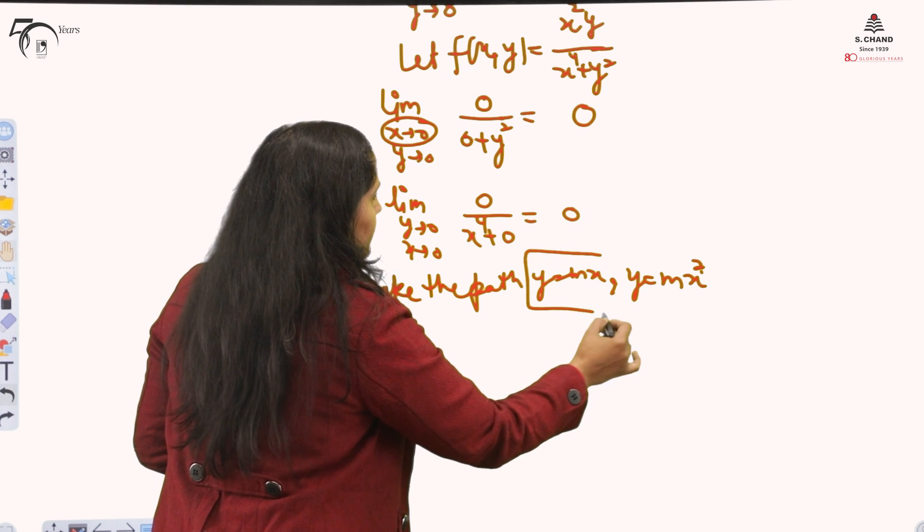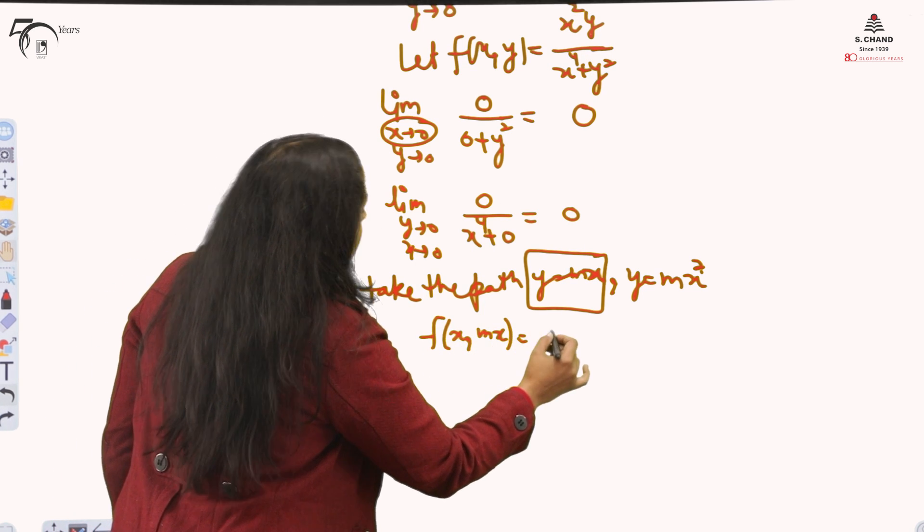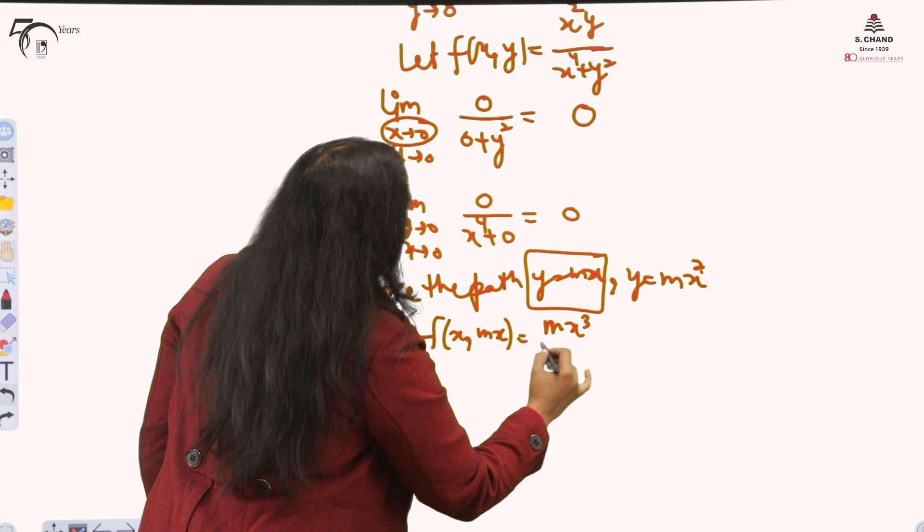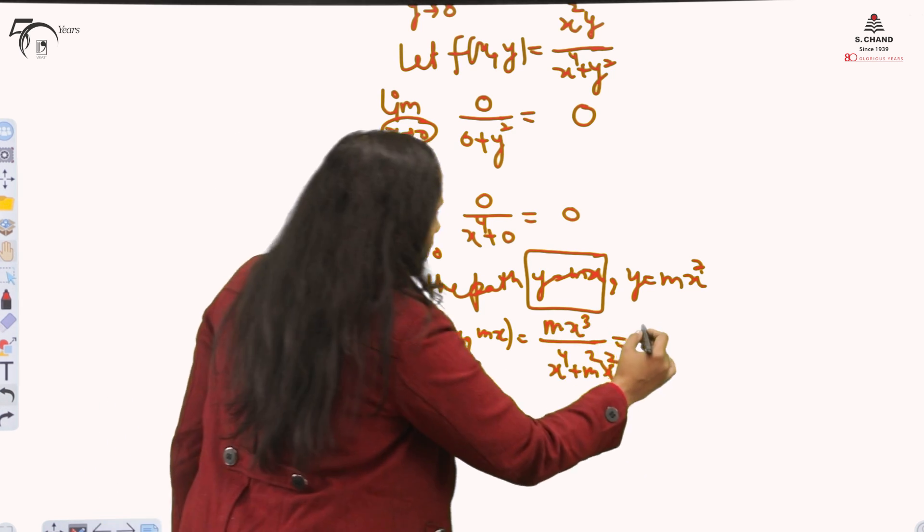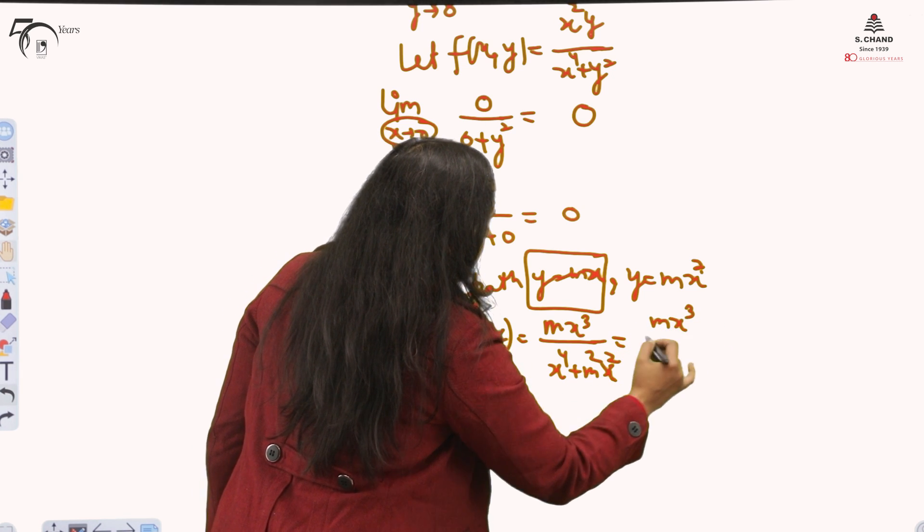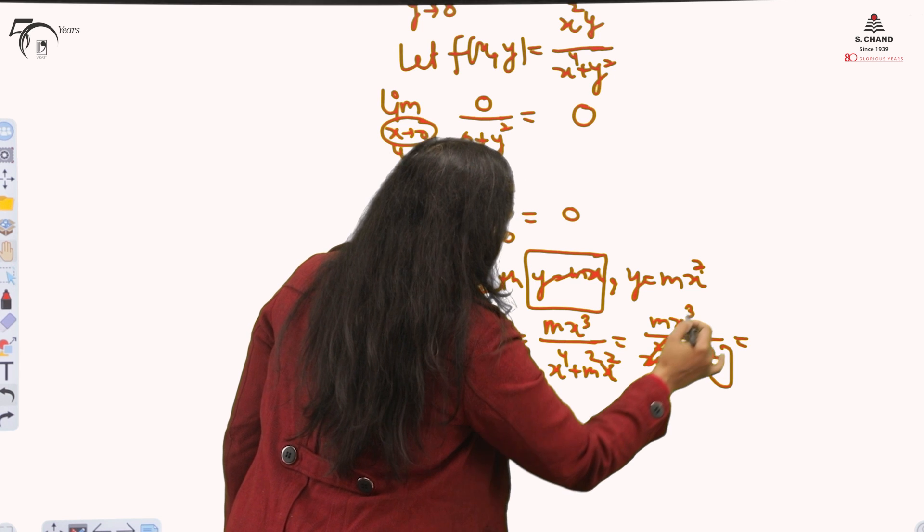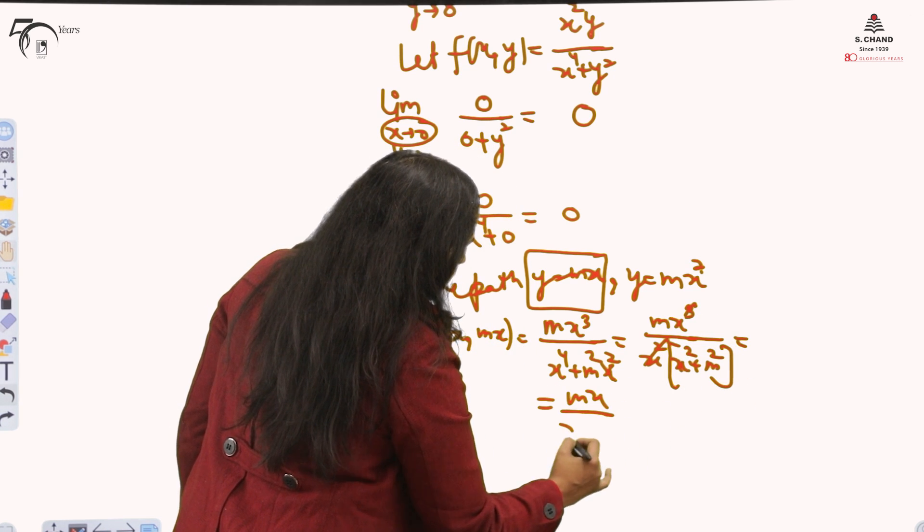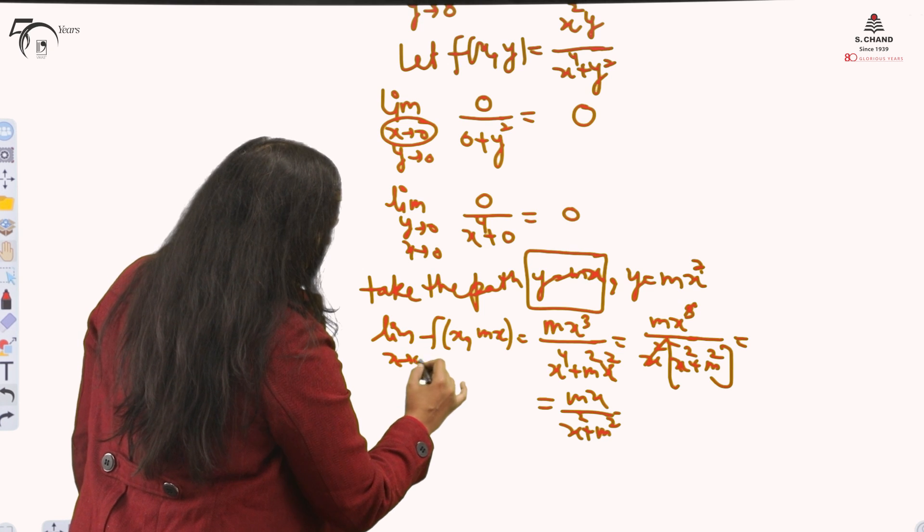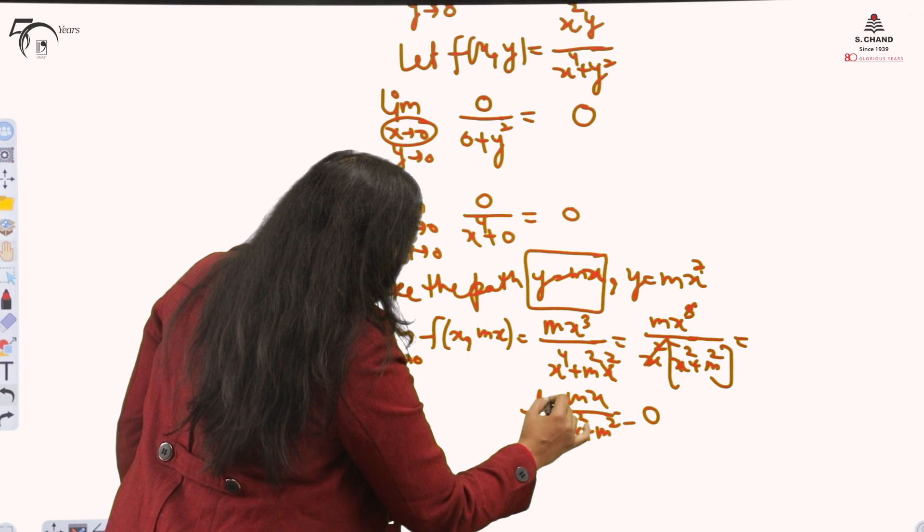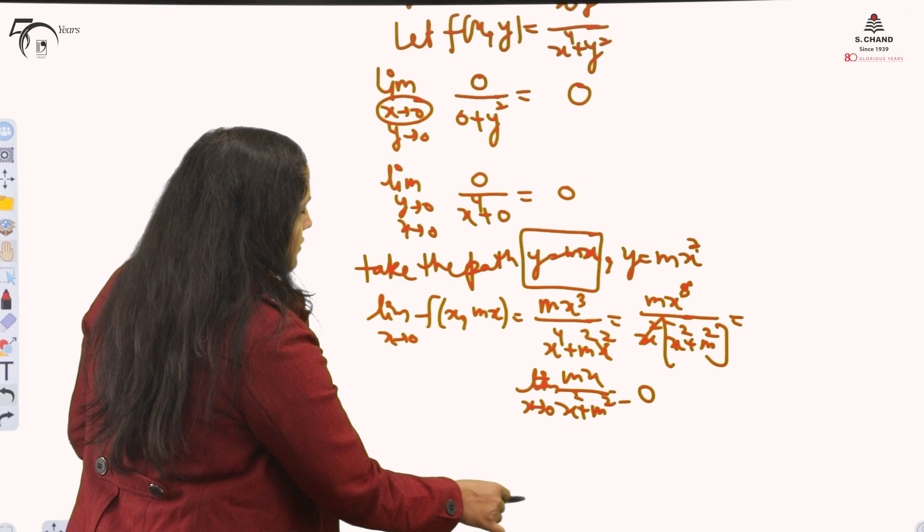y is equal to mx. You substitute. y equal to mx. Your function will become mx³/(x⁴ + m²x²). Take out common, x² common. And 1, x² + m². This is mx/(x² + m²). When you will take the limit x tending to 0, what it will give you? Because x is there, it will be 0. Limit x tending to 0, again we can see it is 0 and it is existing. But the last to check now.